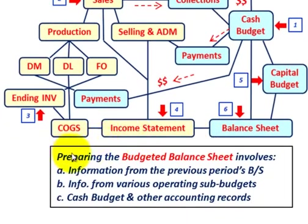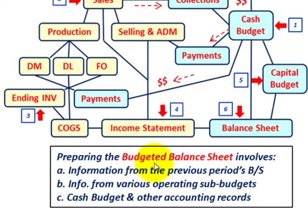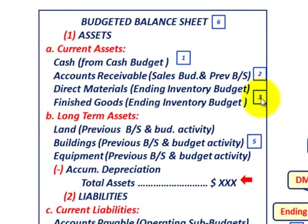Preparing the budgeted balance sheet involves: (a) information from the previous period's balance sheet, (b) information from the various operating sub-budgets we looked at, and (c) the cash budget and other accounting records, which would include the capital budget as well. That's basically how we determine our budgeted balance sheet and where we get all this information from.